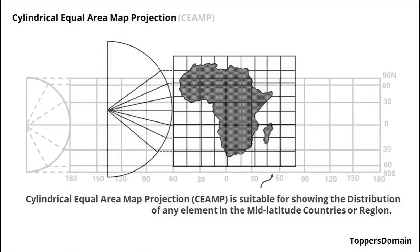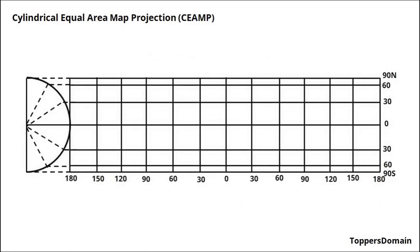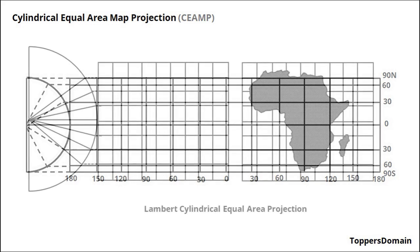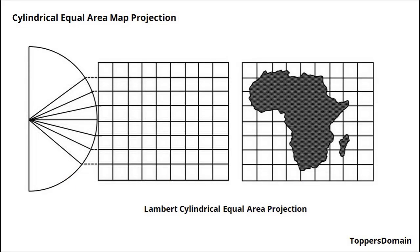And there you have it — the Cylindrical Equal Area Map Projection, a cartographic expression that has been with us for centuries. Lambert's innovative approach to preserving equal area has made this projection invaluable for specific mapping needs. Just remember to consider its limitations and distortions when using it for your cartographic endeavors. If you found this video informative, don't forget to give it a thumbs up and subscribe to our channel for more exciting content like this. Thank you for joining us today, and we'll see you in the next video. Happy mapping!